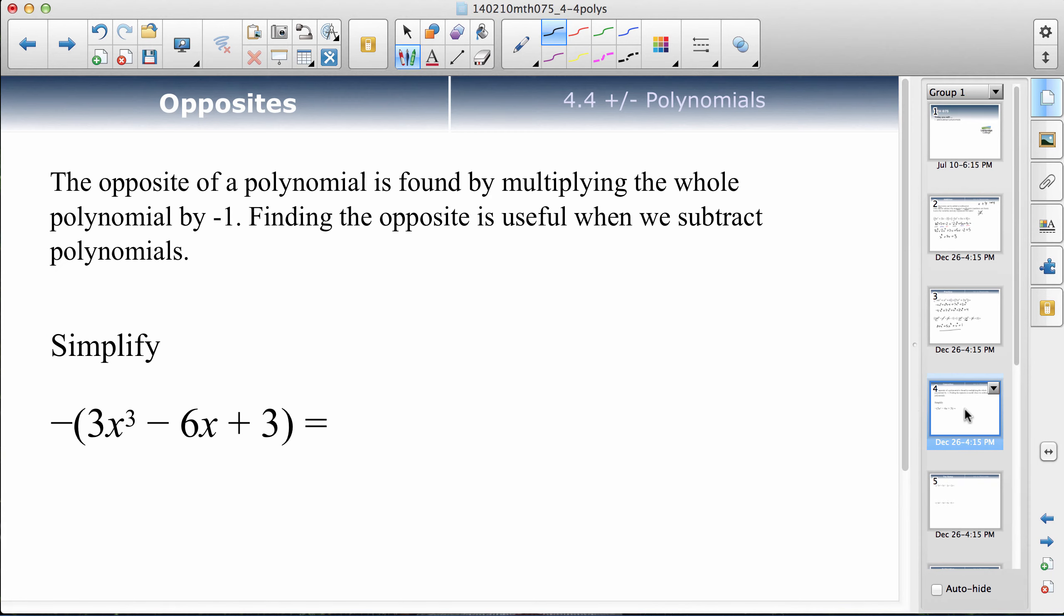When we subtract polynomials, what we typically do is find the opposite of the second one. Rather than subtracting, we add the opposite. To find the opposite, if I have a negative sign in front of a bracket, that means everything inside there changes. So inside here I have a positive 3x cubed. If I find the opposite, that will change to a minus 3x cubed.